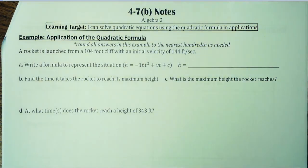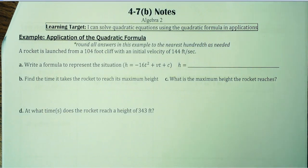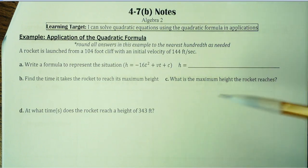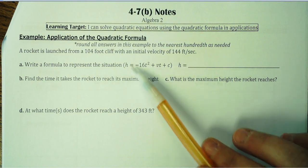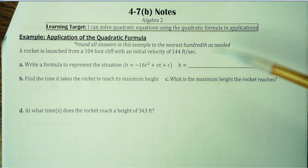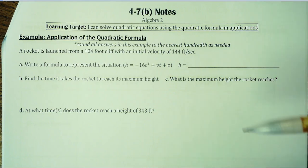We're just going to finish up the quadratic formula by, instead of a straightforward equation being given to you, we're going to go through and do an application problem. This says a rocket is launched from a 104-foot cliff with an initial velocity of 144 feet per second. This formula gives an object's height in feet based on gravity, velocity, and initial height of the object.